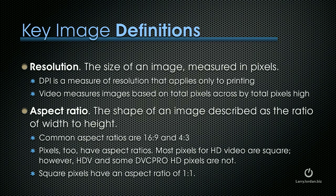However, pixels too have aspect ratios. Most pixels for HD video are square. However, HDV and some DVC Pro HD formats are not. Also NTSC and PAL don't use square pixels — they use rectangular pixels. Square pixels are described as having an aspect ratio of 1 to 1.